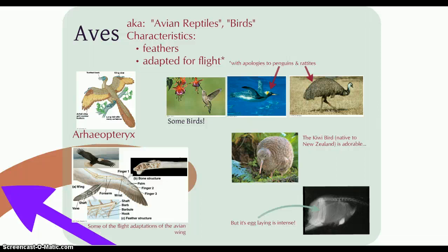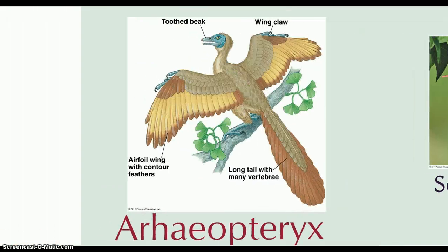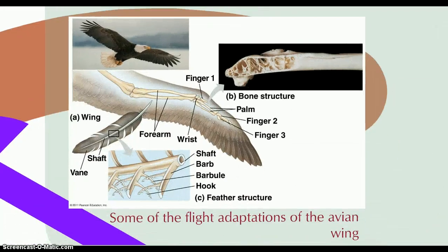The group most closely related to reptiles is Aves, the birds. Birds have feathers, and with rare exceptions like penguins and ostriches, they fly. Archaeopteryx has a dinosaur-like reptilian skeleton, but its fossils have been found to possess wings with feathers, showing the transition from a reptile-like species to a bird-like species. Adaptations for flight include contour feathers that help control airflow over the wings, and hollow bones with low density.